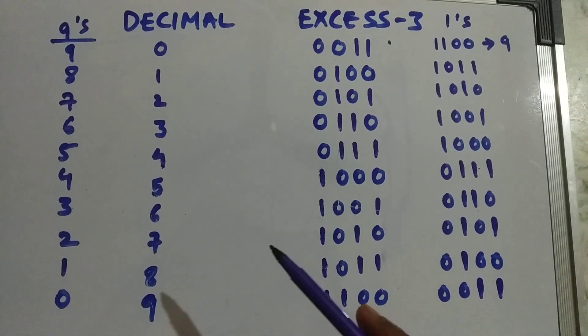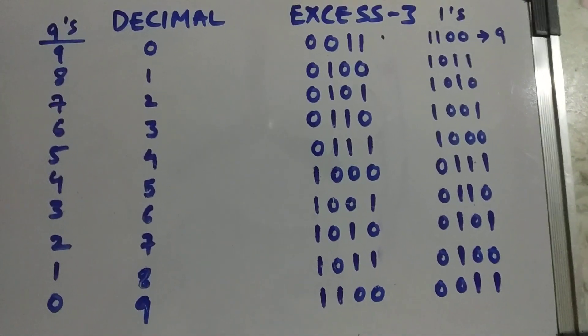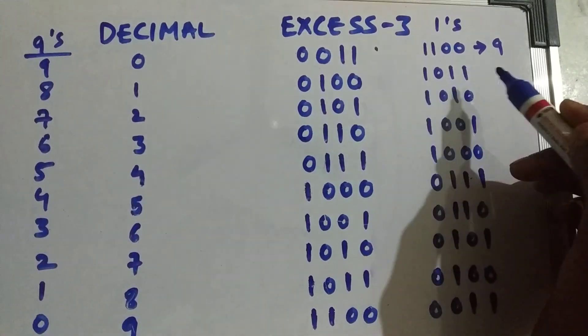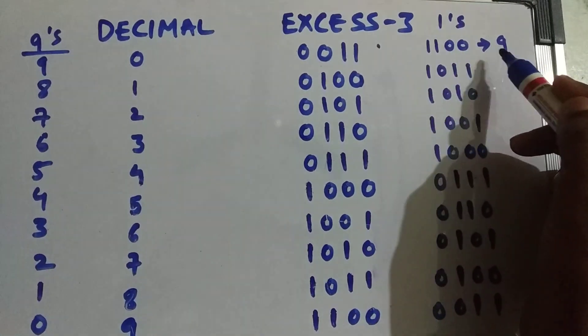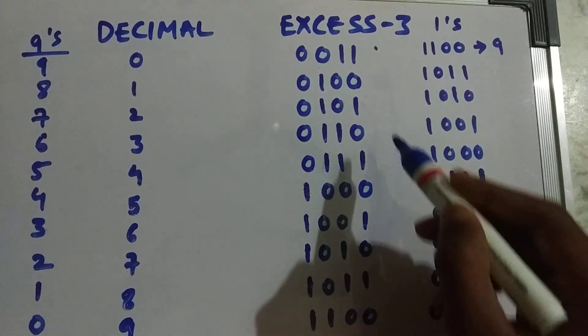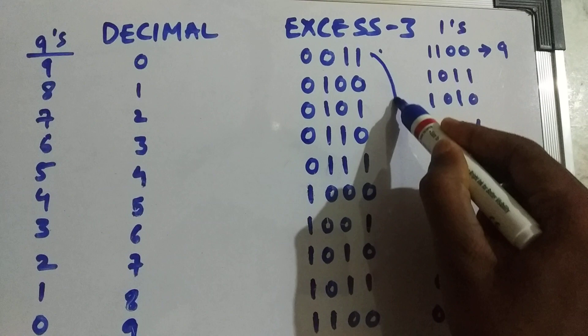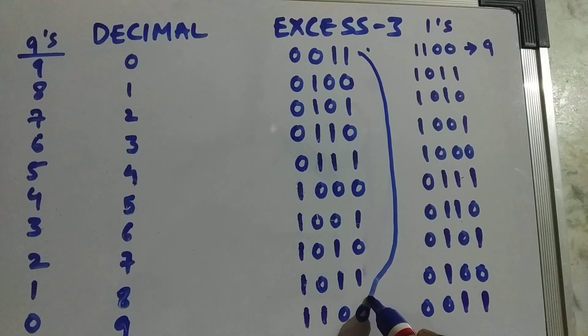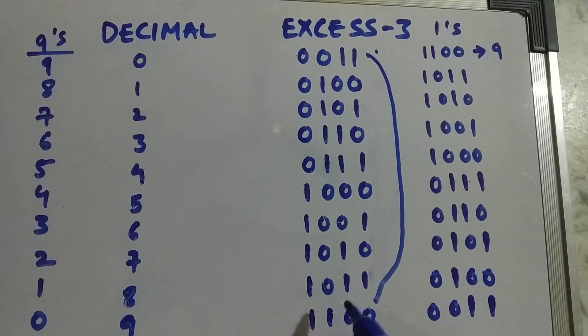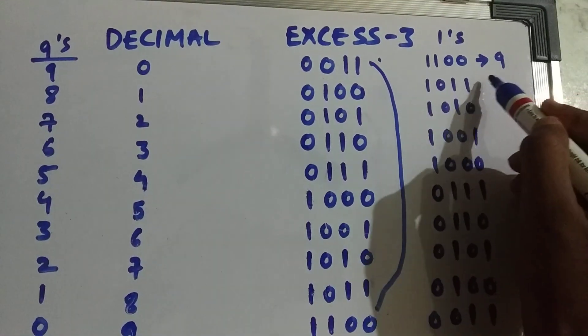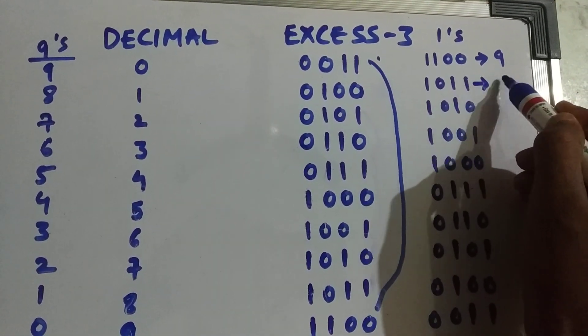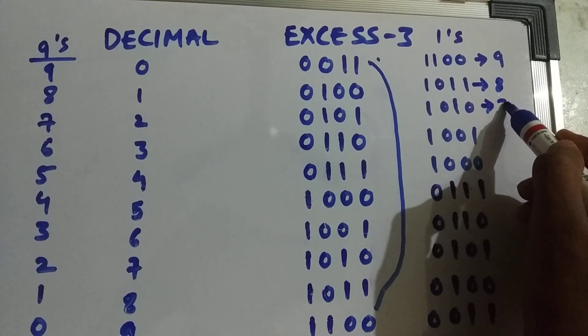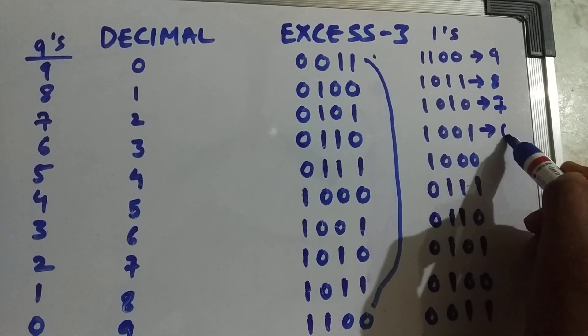A thing you need to observe here is carefully observe. 1100 is 9 in Excess-3. So this and this have a link now. 1100 is 9, 1011 is 8, 1010 is 7, and so on.